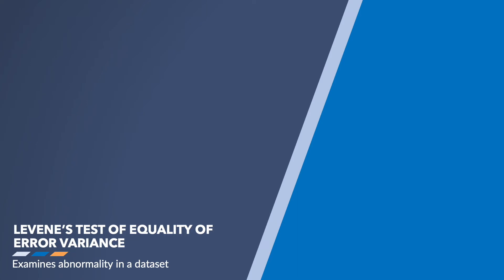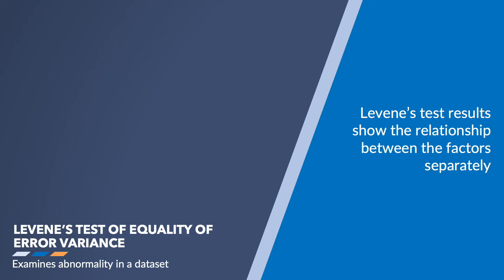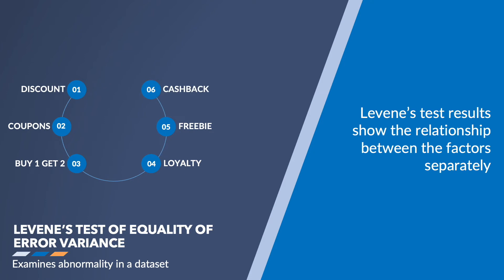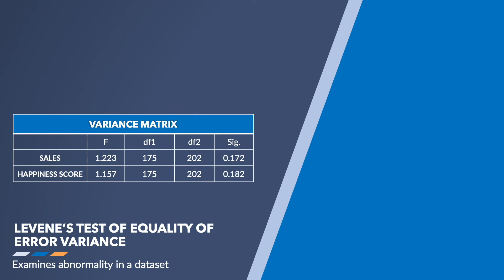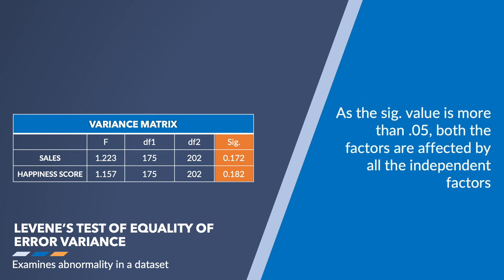In this result table, the impact on each dependent variable is shown separately. For this example, it shows how the promotional activities — discounts, coupons, buy one get one free offers, loyalty points, and other freebies — are firstly affecting customer satisfaction and secondly how they are affecting sales. Promotional activities are the independent factors, while customer satisfaction and sales are the dependent factors. The significance values for sales and customer satisfaction are displayed in separate rows. Here, both values are more than 0.05: sales is 0.172 and customer satisfaction is 0.182, so promotional activities do affect both sales and customer satisfaction.